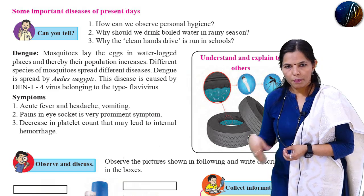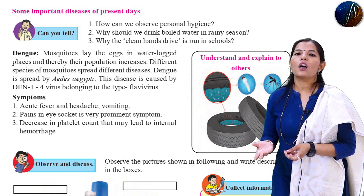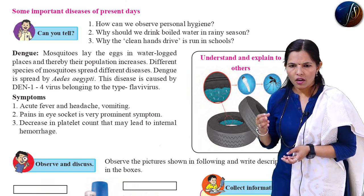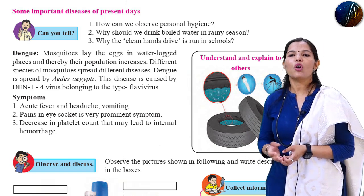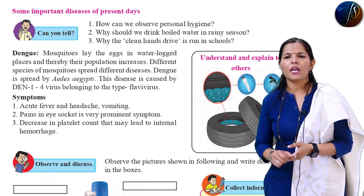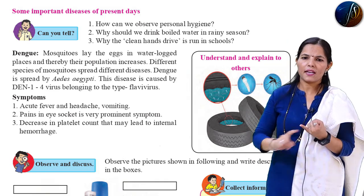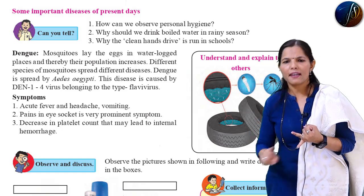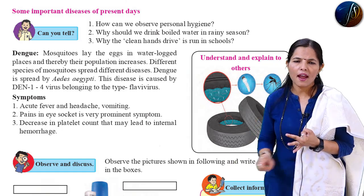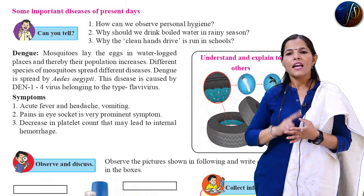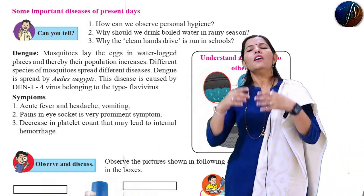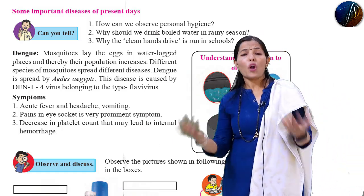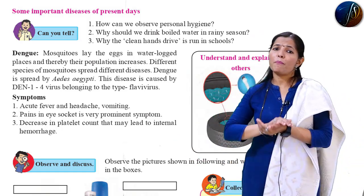Because boiling kills all the germs in the water and we get prevention from different types of diseases. Polluted water causes different types of diseases — hepatitis, dysentery, diarrhoea, typhoid, and jaundice.